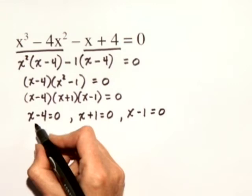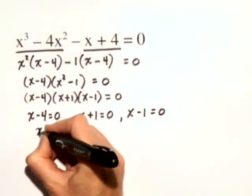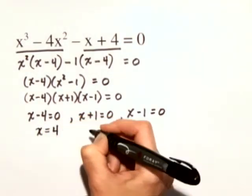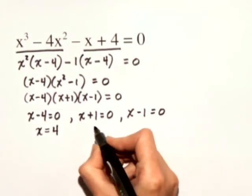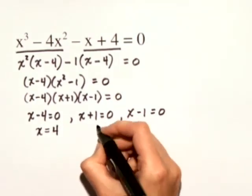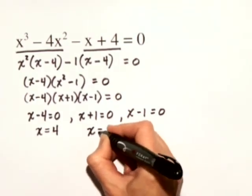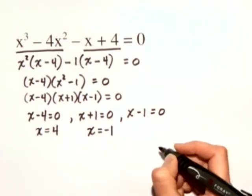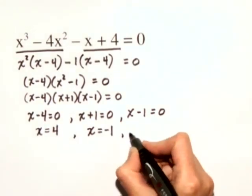Solving our first equation, x minus 4 equals 0, gives us the solution x equals 4. With the second equation, solving x plus 1 is equal to 0, we get the solution x equals negative 1.